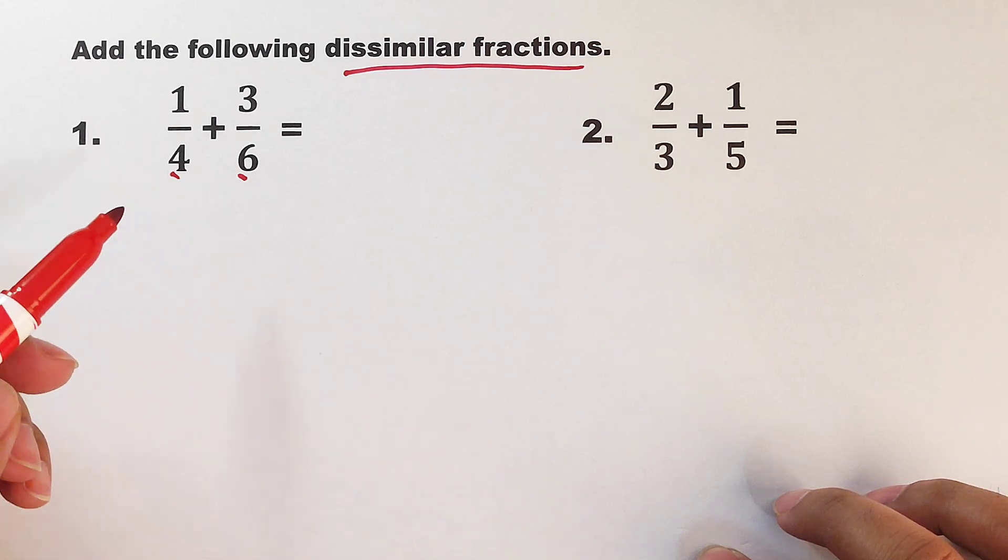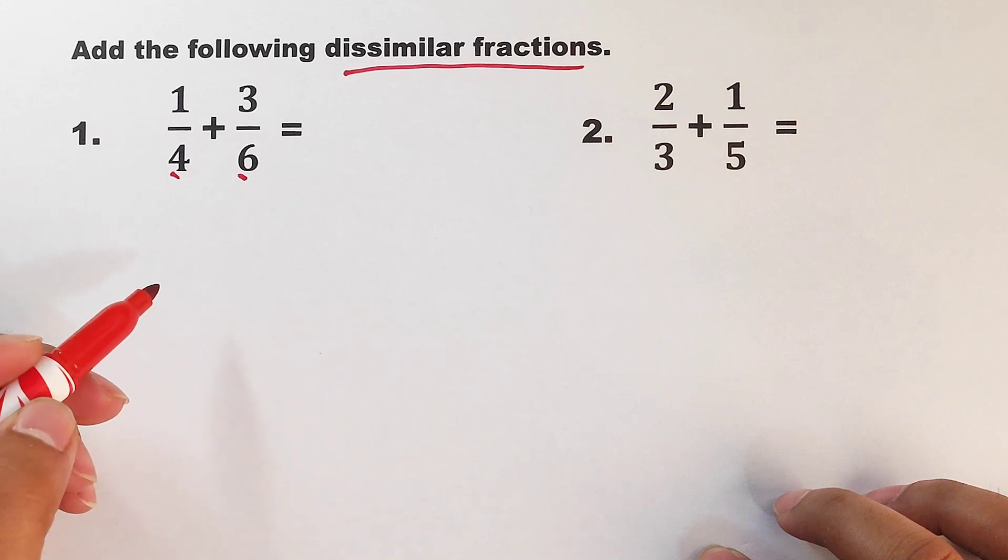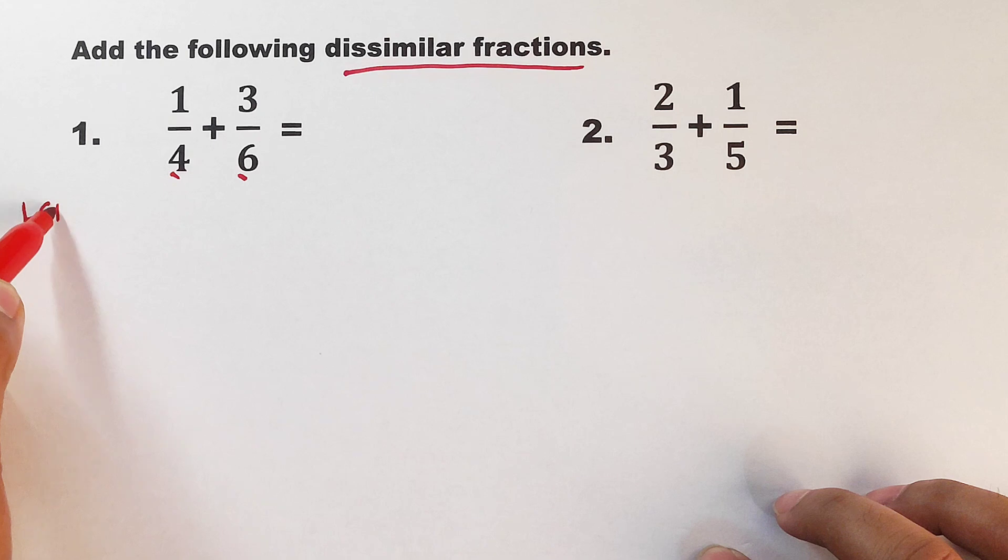So first, we need to think of the LCD between 4 and 6. So what do you think is the LCD between 4 and 6? Okay, very good. The LCD or the least common denominator is 12.